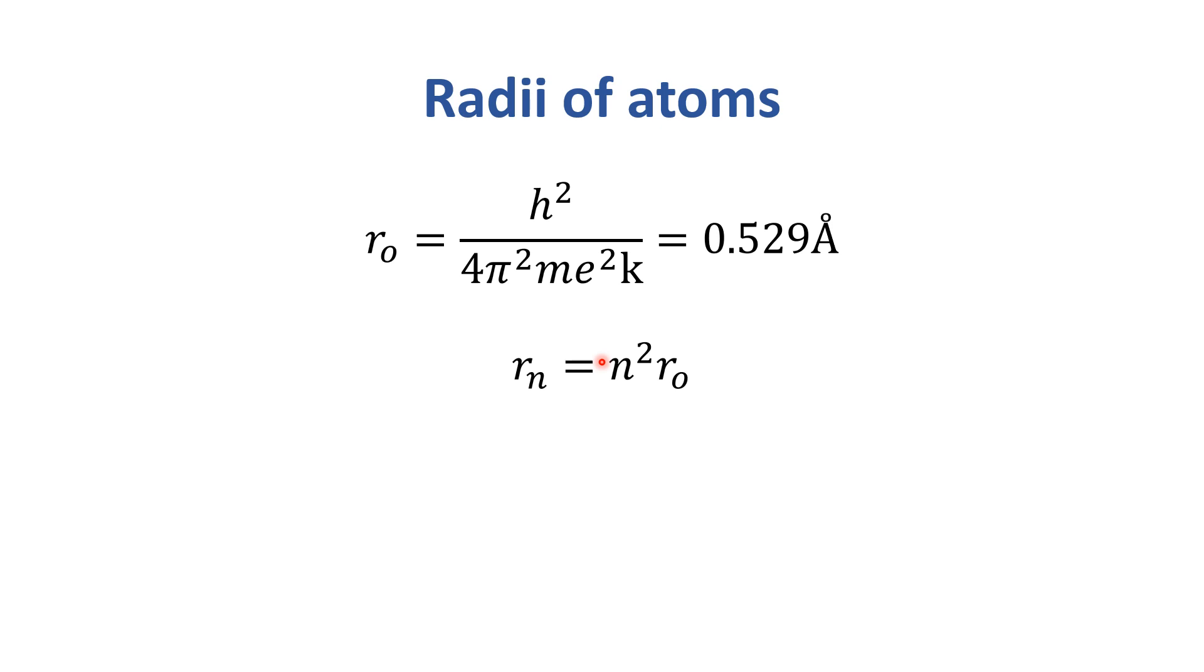Just like the second shell, then n square 2 will come. So, 2 square, i.e. 4. 4r₀ is the radius of the second shell. For third shell, 3 square n square, so 3 square into r₀, and so on.